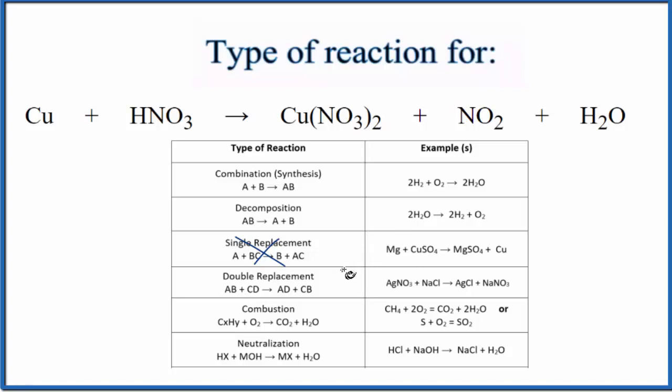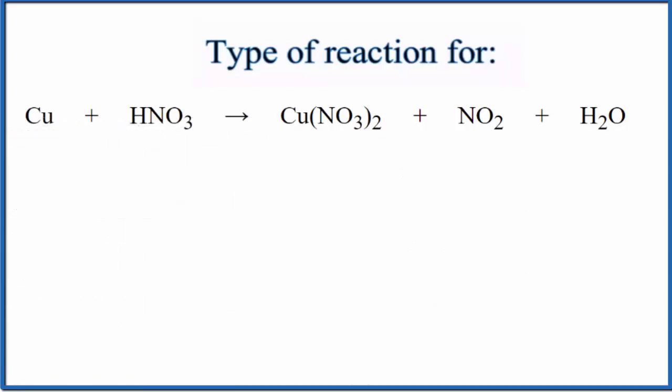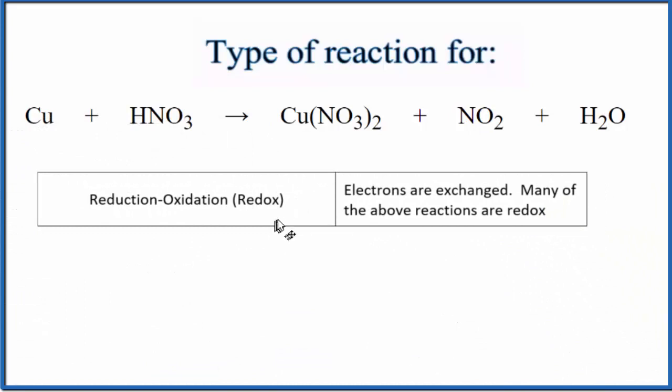There is another type of reaction though that we could talk about. This is an example of what's called a redox reaction, reduction-oxidation. That's because the oxidation states change for the copper and the nitrogen.